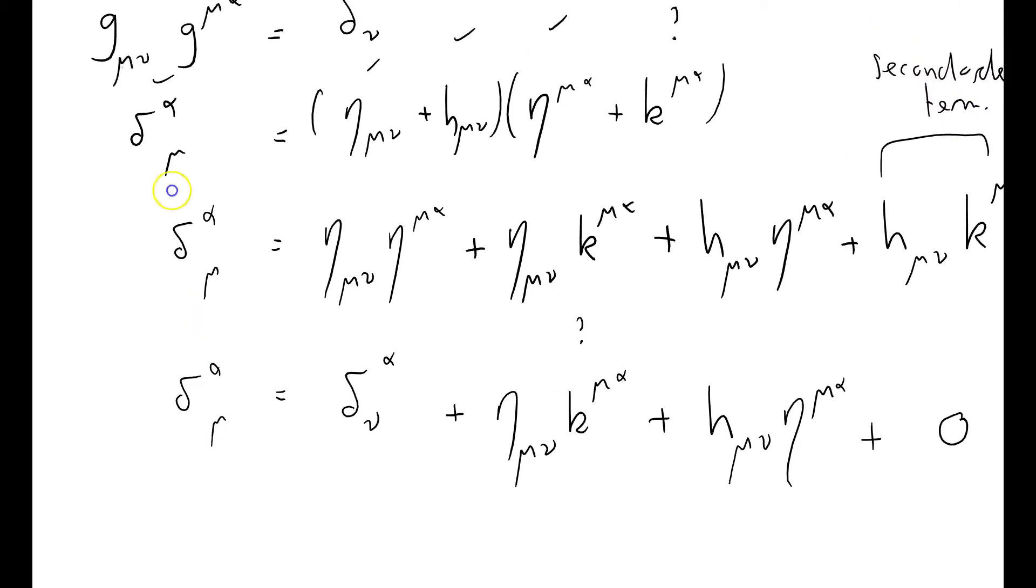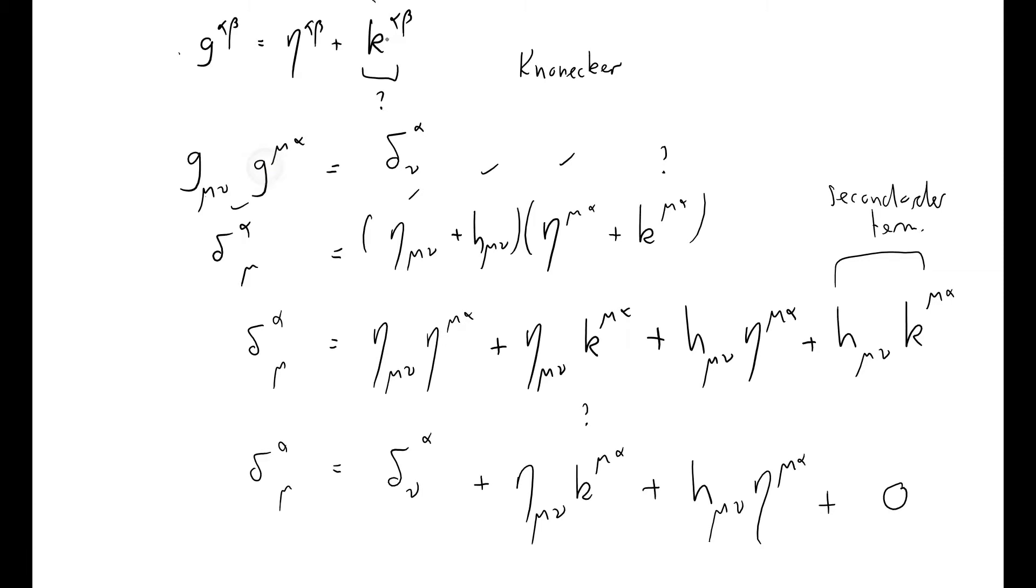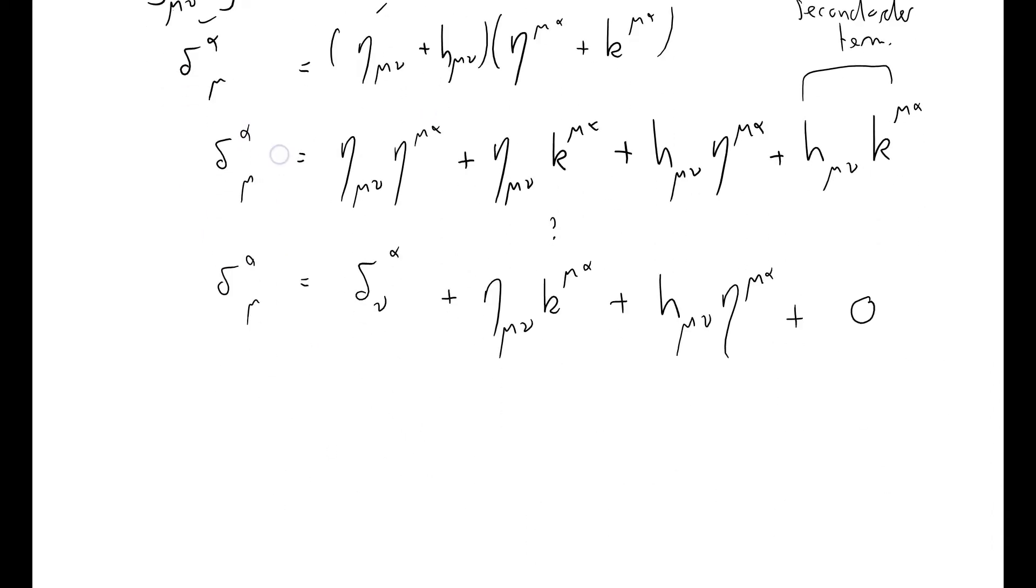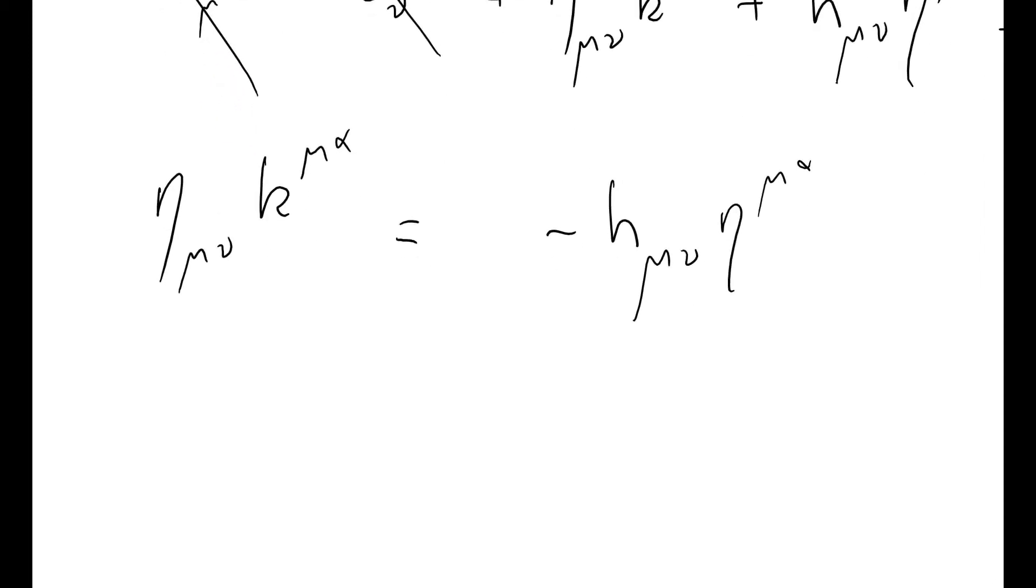So where does that get us? That's Kronecker delta alpha nu equals, well we know that the product this way of any metric tensor is going to give us the Kronecker delta mu alpha, plus eta mu nu K mu alpha, remember we don't know what K is, we're trying to work this out, plus H mu nu eta mu alpha, plus, well I'm just going to assert that that's a zero, because this is a second order term. Well that's great, my deltas cancel, and what have I got left?